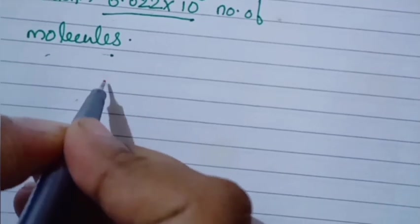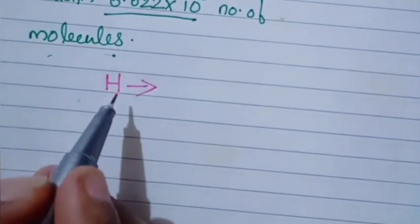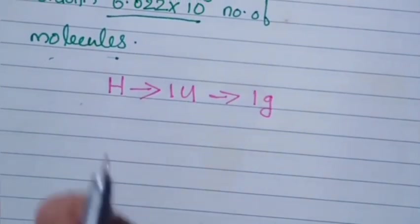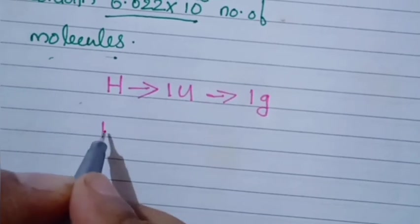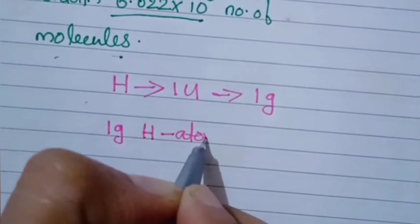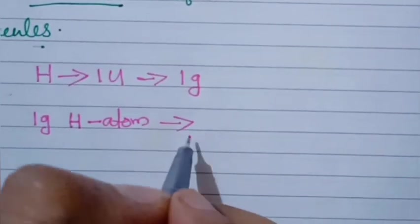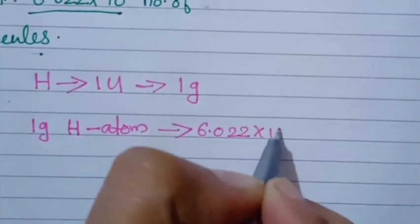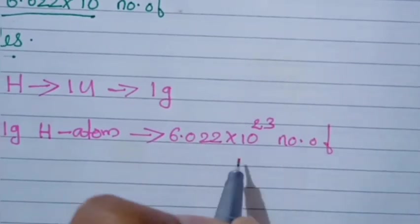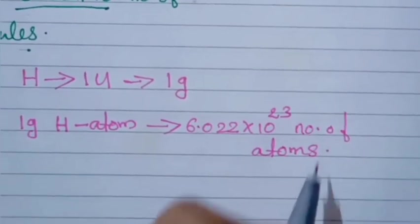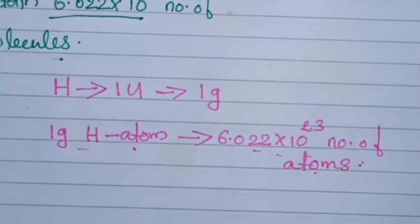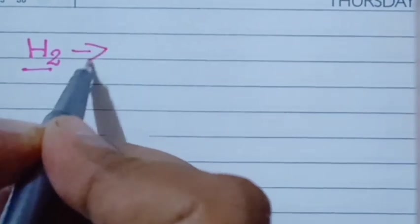Let's prove this with examples. The atomic mass of hydrogen is 1 u, which in grams is 1 gram. So, 1 gram of hydrogen atoms contains 6.022 × 10²³ atoms. One gram hydrogen atom is equal to 6.022 × 10²³ atoms.